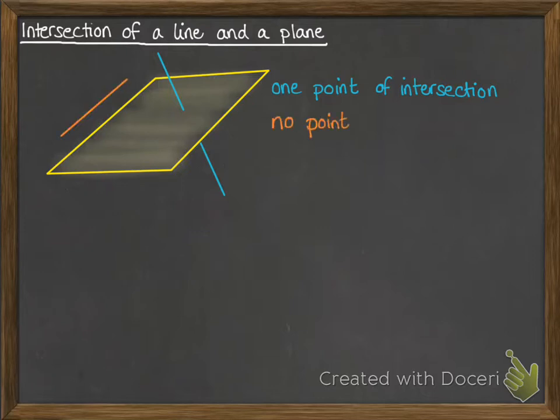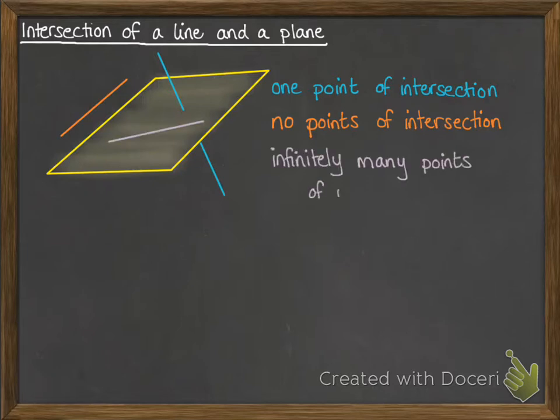We could have a line that runs parallel to the plane, so there's no points of intersection. We could also have a line that's actually on the plane, so there's infinitely many points of intersection.